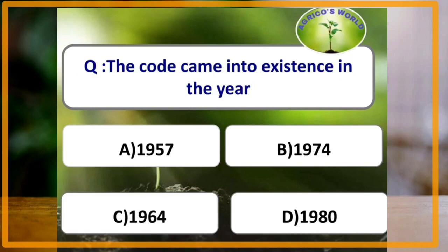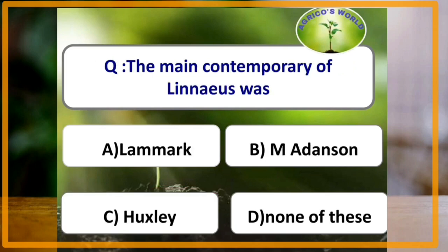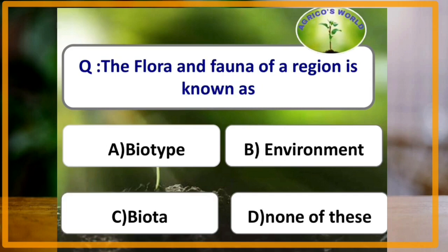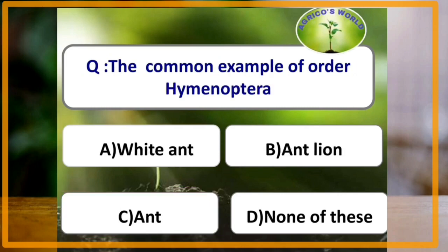The ICZN code came into existence in the year 1964. The main contemporary of Linnaeus was M. Addison. The family Acylidae belongs to the suborder Brachycera of the order Diptera. The flora and fauna of a region is known as Biota. The common example of order Hymenoptera is an ant.